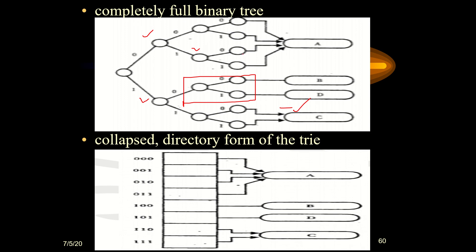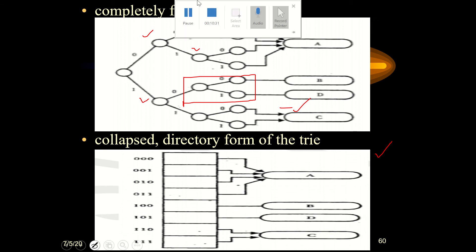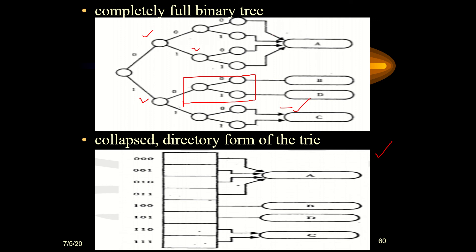Now it is a complete binary tree. In the second step, we collapse it into a directory structure. The available addresses now run from 000 to 111. Addresses 000, 001, 010, and 011 all point to A. Address 100 points to B and 101 points to D. Addresses 110 and 111 both point to C. This is how extendable hashing works using a directory structure. Thank you.